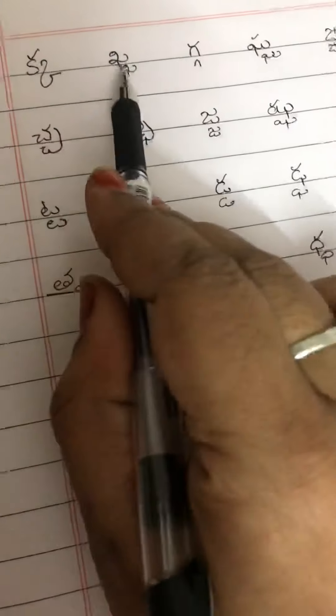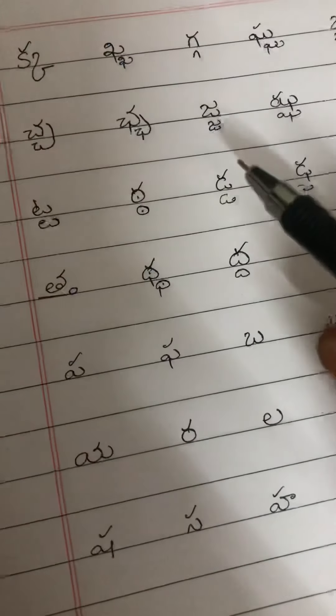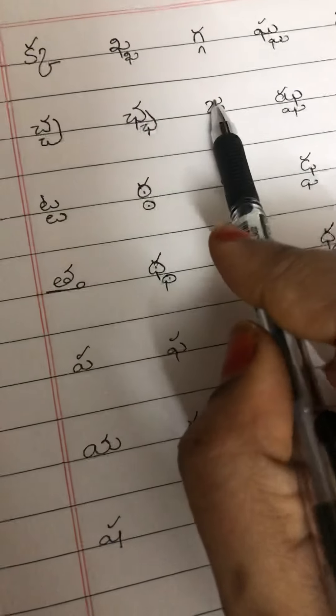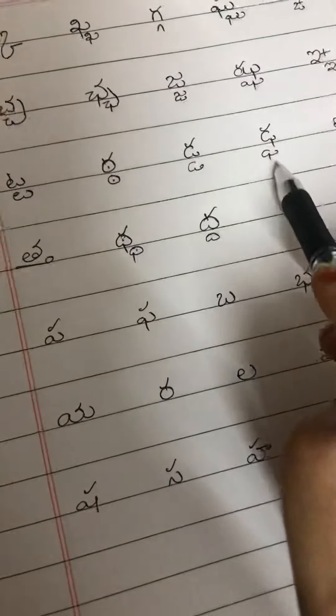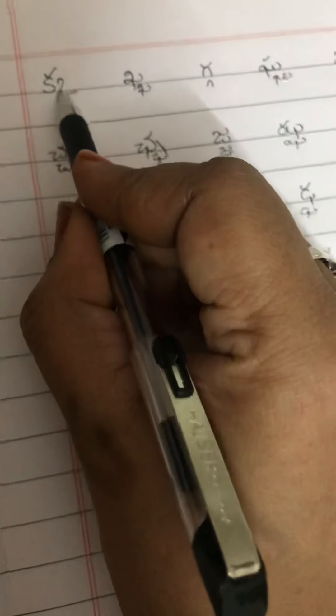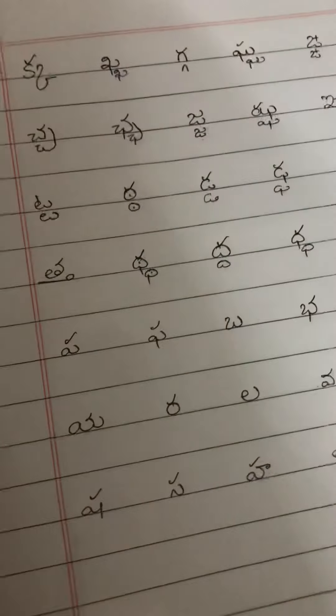Remember children, when you are writing these Ottilu for any other letter also, not the same letter, for any other letter also, the Ottilu will be written like this only. For example, if you are writing kaavattu for another letter also, it will be written next to the letter like this.